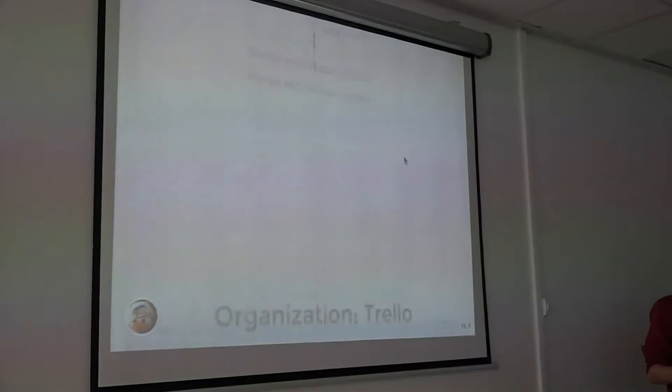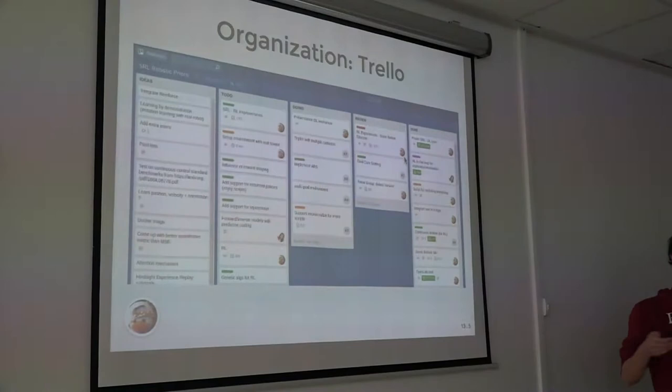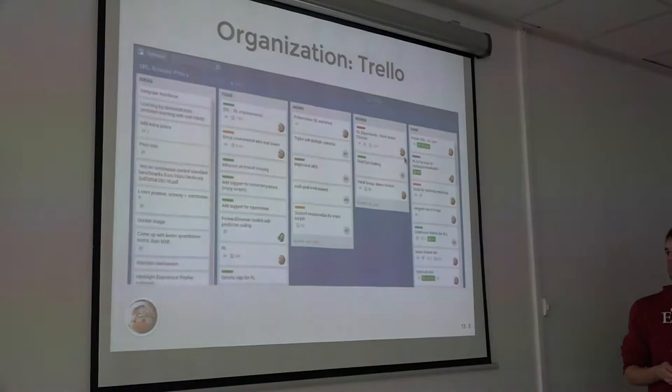Code review also allows you to learn from others — that was something not present when I arrived and now it's working well. To organize different tasks, we are using Trello with the common Kanban method: to-do, doing, and done columns, where you can keep track of what should be done, who is doing what, and what is high or low priority.